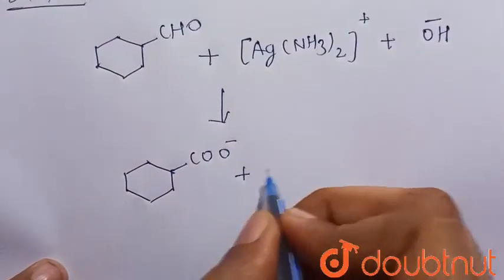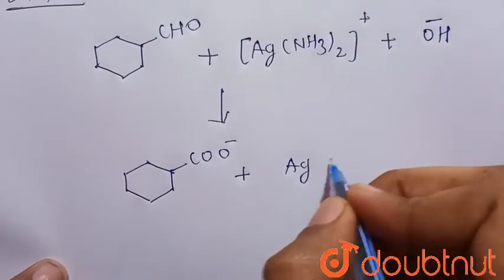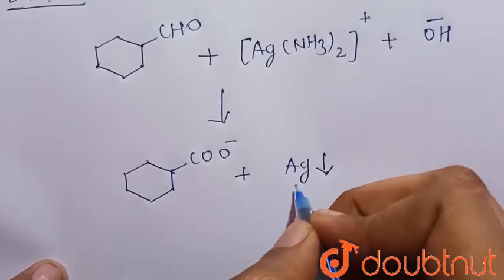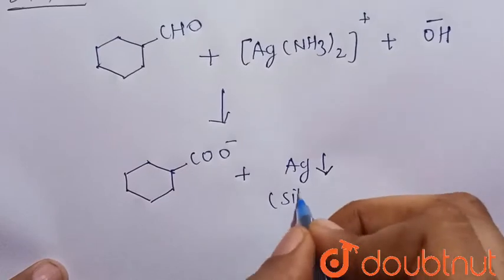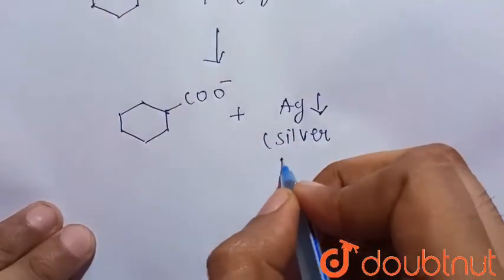Plus silver mirror, because we know that aldehyde gives the positive Tollen's test. So this is the silver mirror.